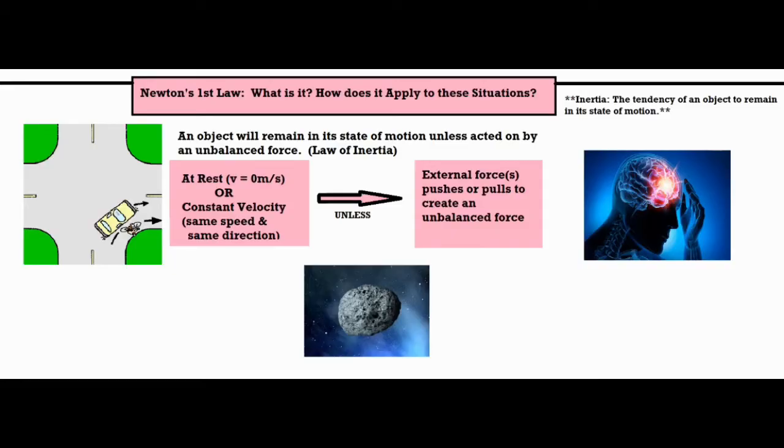Inertia is the tendency of an object to remain in its state of motion. It's basically a property of all matter that describes how likely it is to keep on doing what it's doing. Because inertia doesn't specifically have a unit of its own, it is measured by the amount of mass that an object has.